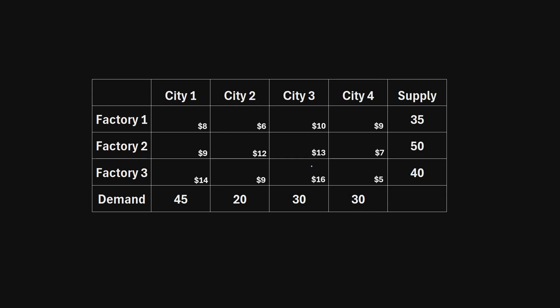Using the least-cost method, the first step is to identify the cell with the smallest shipping cost. Looking at all shipping costs, the cell with $5 is the smallest. If two cells tie for the minimum cost, choose the one with the higher demand. In this case, $5 is unique, so we choose that cell to start.